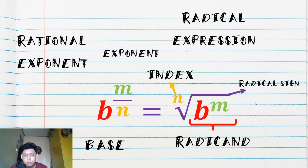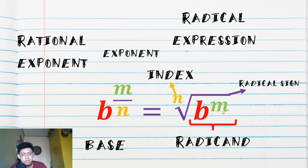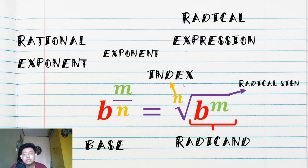Let's have an example. To convert, we copy the base and place it inside the radical symbol. The numerator of the fractional exponent will be placed as the power of the radicand, and the denominator will serve as the index of the radical sign.